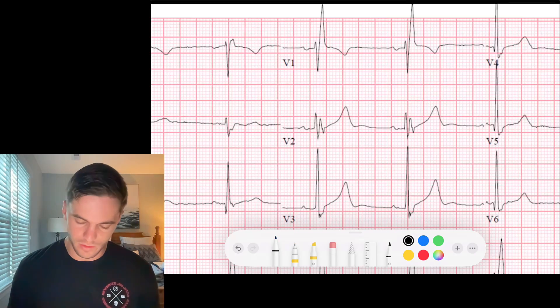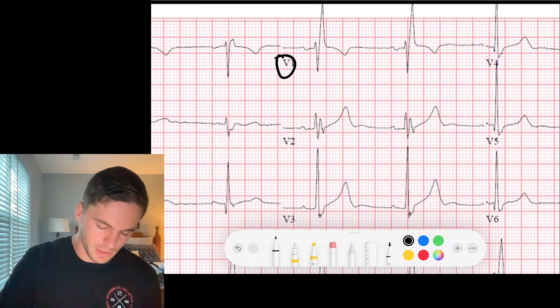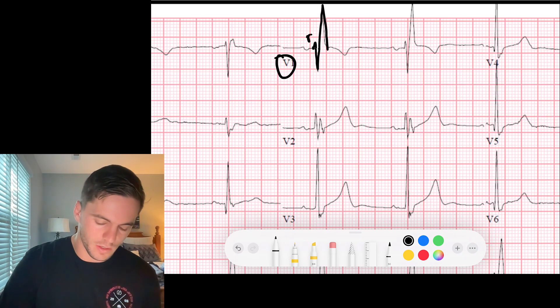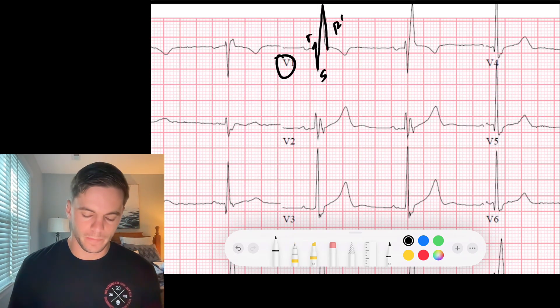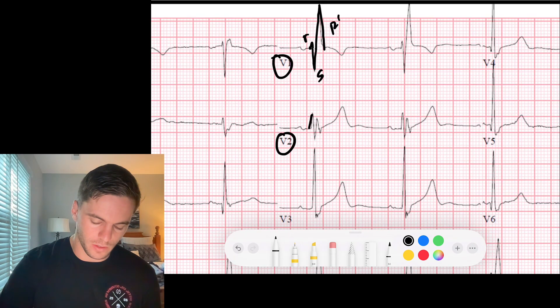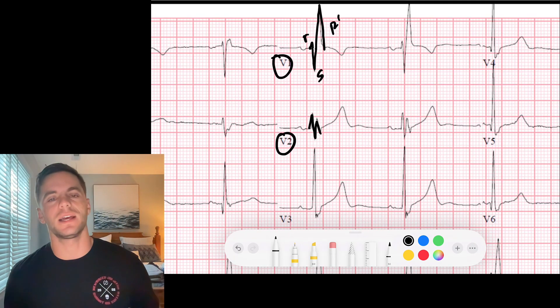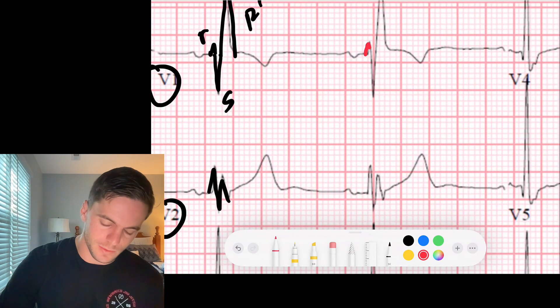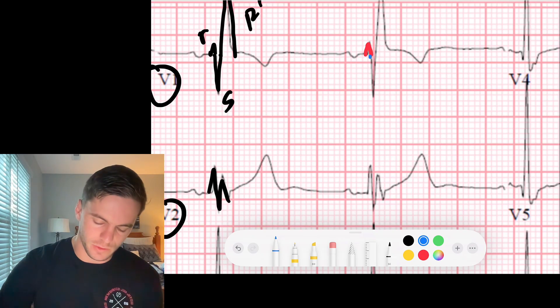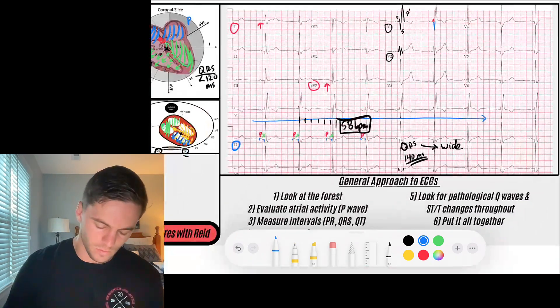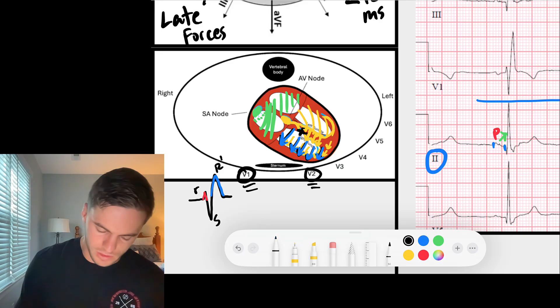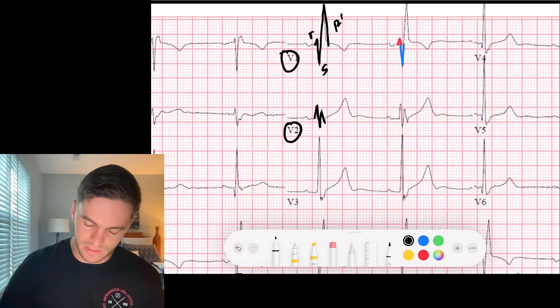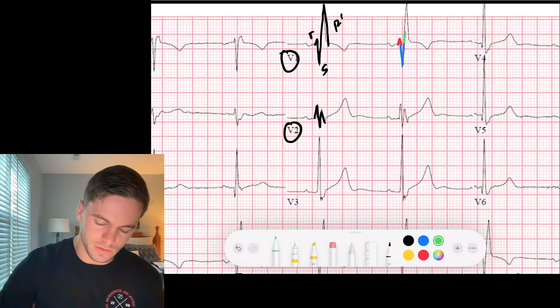So we get an R, S, R prime in V1. And that is our septal R wave, our S wave, which is the rest of the left ventricular depolarization, and then our R prime wave, which is late forces going towards the right. That is very characteristic of a right bundle branch block. And so if you take a look here at V1, look what we get. We've got a little septal R wave. We've got our S wave. And then we have this nice R prime wave. There's an R, S, R prime.